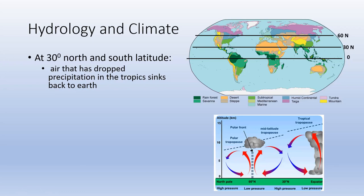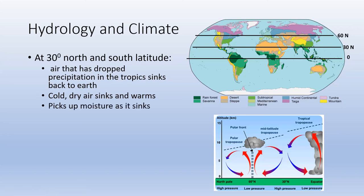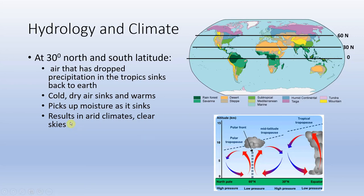At 30 degrees north and south latitude, the air that has dropped its precipitation sinks back due to density. This cool, dry air warms as it descends, picks up moisture, and creates arid climates and clear skies. Many of the world's major deserts — the Sahara, the Sonoran, the Great Australian Desert — lie at 30 degrees north and south, and it's no coincidence. This 'sponge effect' soaks all the extra moisture out of the air.